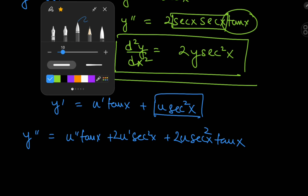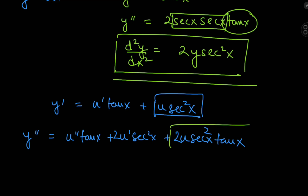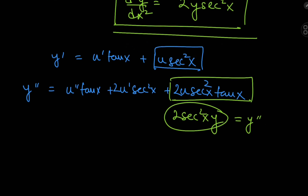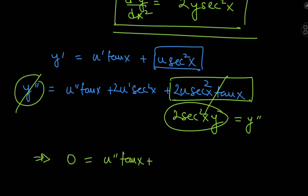That last term is familiar: it contains 2·sec²(x) and u·tan(x), which is exactly 2y·sec²(x) — the right-hand side of our original equation. So both sides share the same term and we can cancel them, leaving 0 = u''·tan(x) + 2u'·sec²(x).